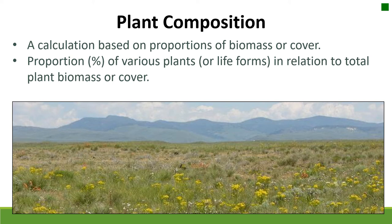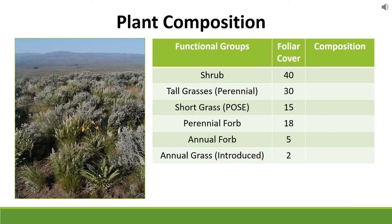Plant composition is another thing we often want to know on a landscape. It refers to the proportion of a community based on biomass or cover of various plants or life forms, depending on your questions. This is really important because it gives you an idea of dominance on the landscape and can help you plan management activities or measure whether you're moving in the right direction according to your objectives. We'll calculate plant composition for a hypothetical community with functional groups including shrubs, tall grasses, short grasses, perennial and annual forbs, and introduced annual grasses like cheatgrass.